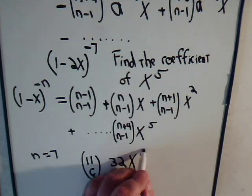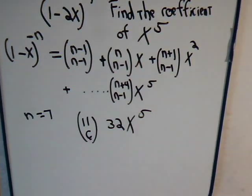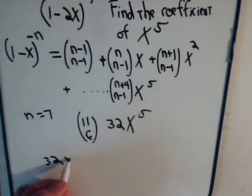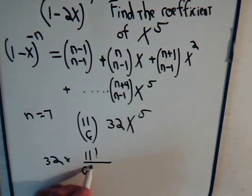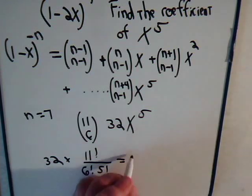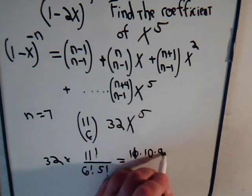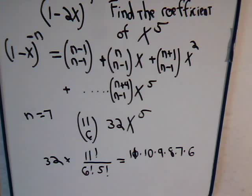Times x to the fifth. And let's see, what would that give us? Here we have 32 times, this would be 11 factorial divided by 6 factorial times 5 factorial. So let's see, this would be equal to 11 times 10 times 6, and we can just decrease all the way to 1.